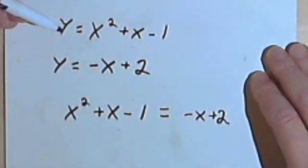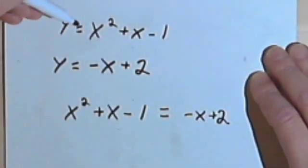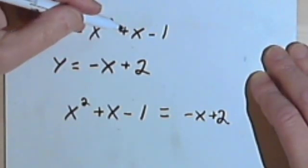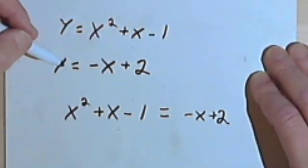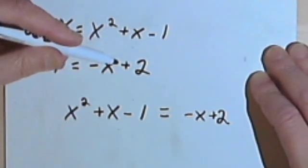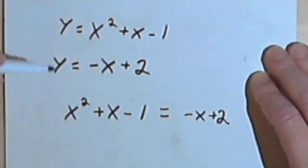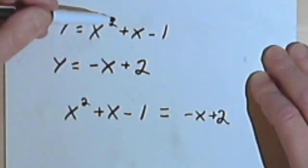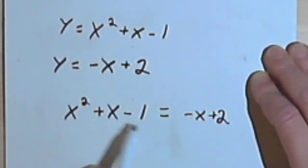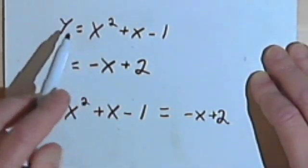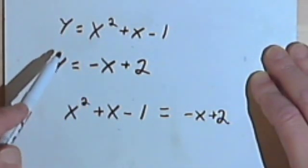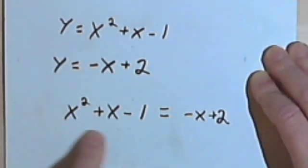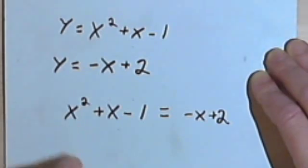In the video about nonlinear systems of equations, I started out with these two equations: y equals x squared plus x minus 1, and y equals negative x plus 2. To solve it algebraically, I took the right side of each equation and set those right sides equal to each other, since they were both equal to y, they must be equal to each other. Then I solved this algebraically and went on from there.